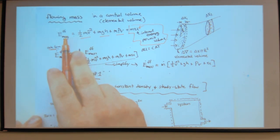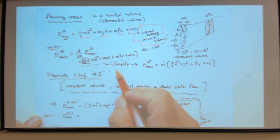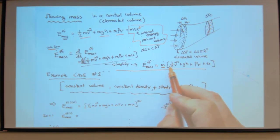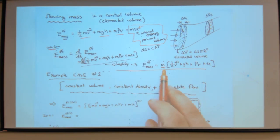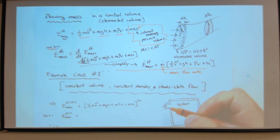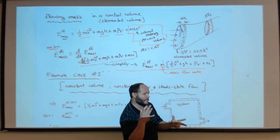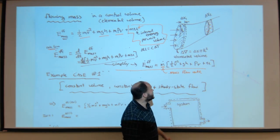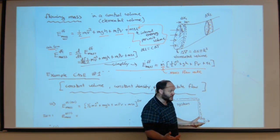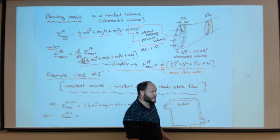We can put this energy associated with the flowing fluid in rate form by taking the time derivative — I get E-dot equals M-dot times the energy terms. M-dot represents the mass flow rate: the amount of mass crossing through that elemental volume per unit time. Assuming uniform density within the elemental volume, I know the density, I know the volume, I can calculate the mass. M-dot is dm/dt.